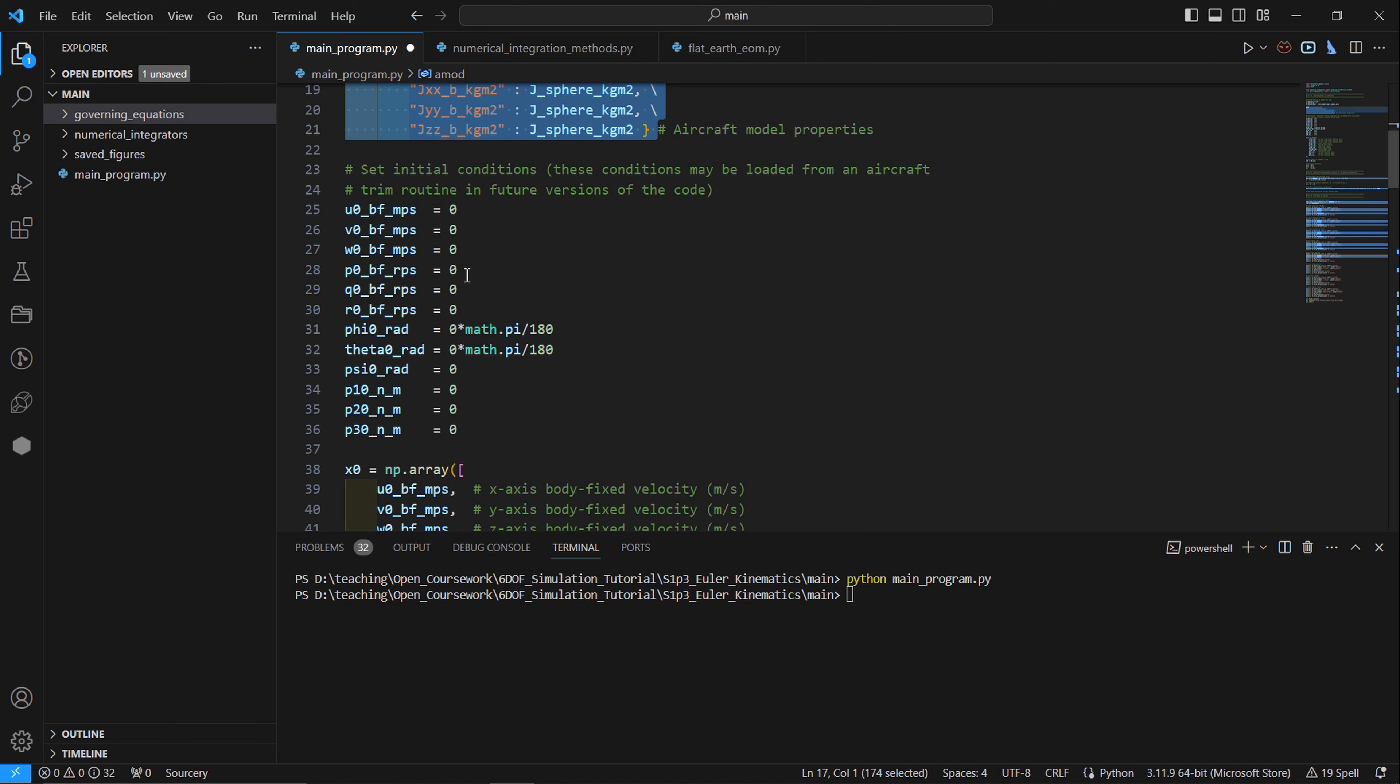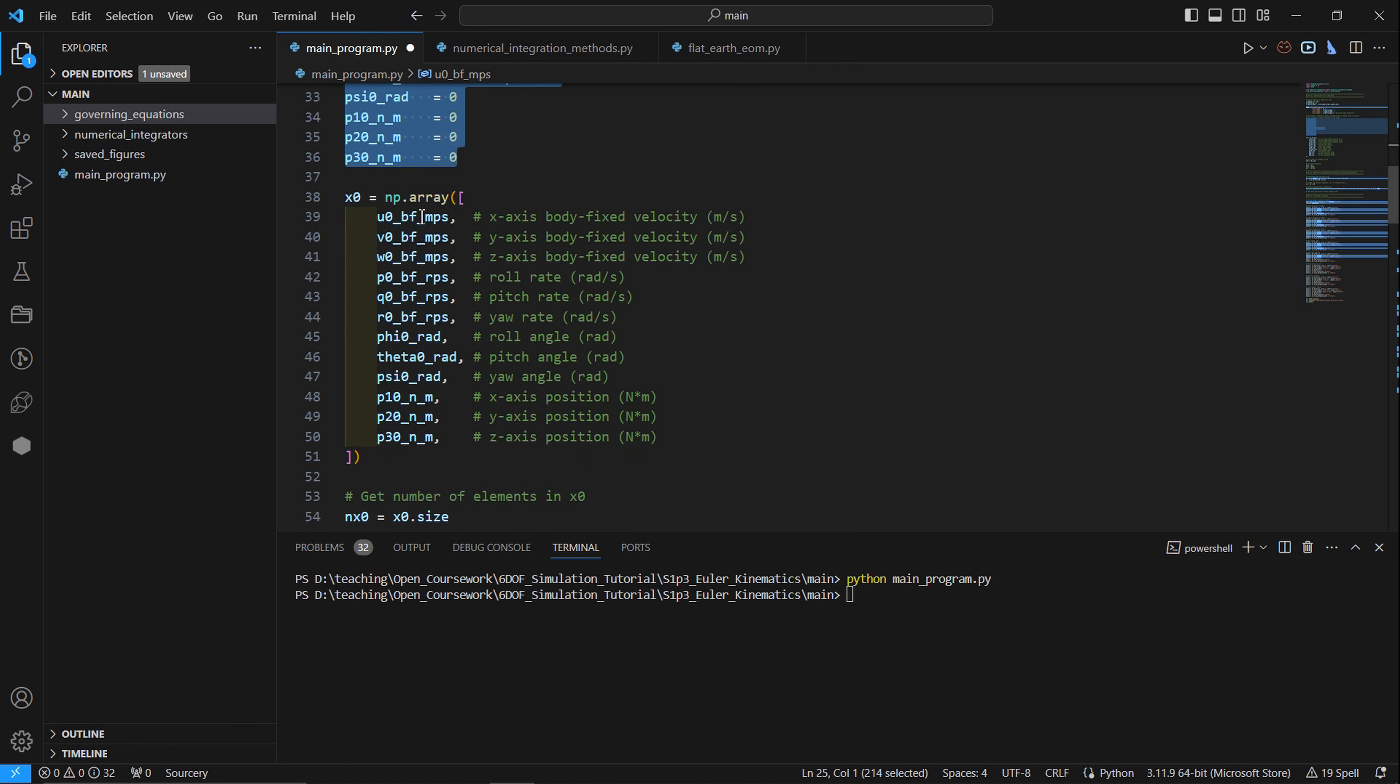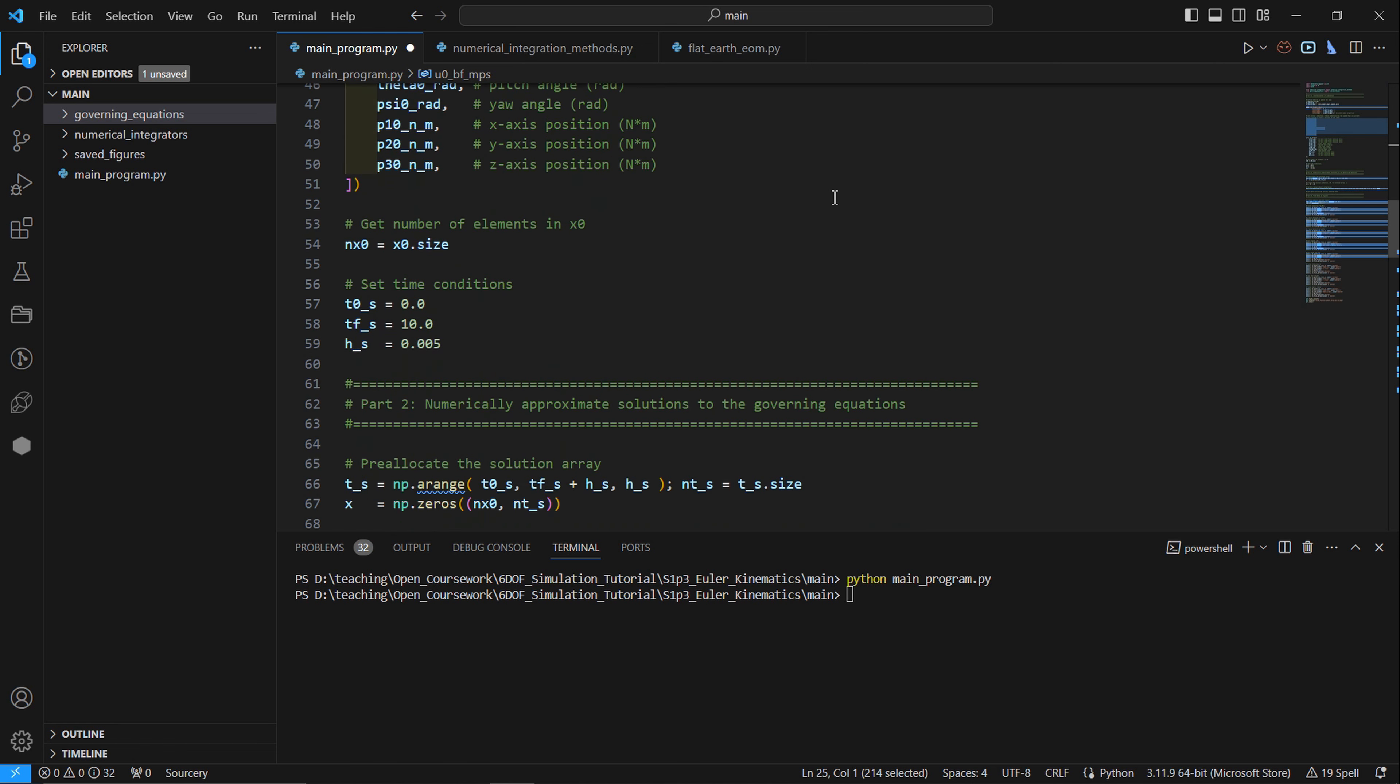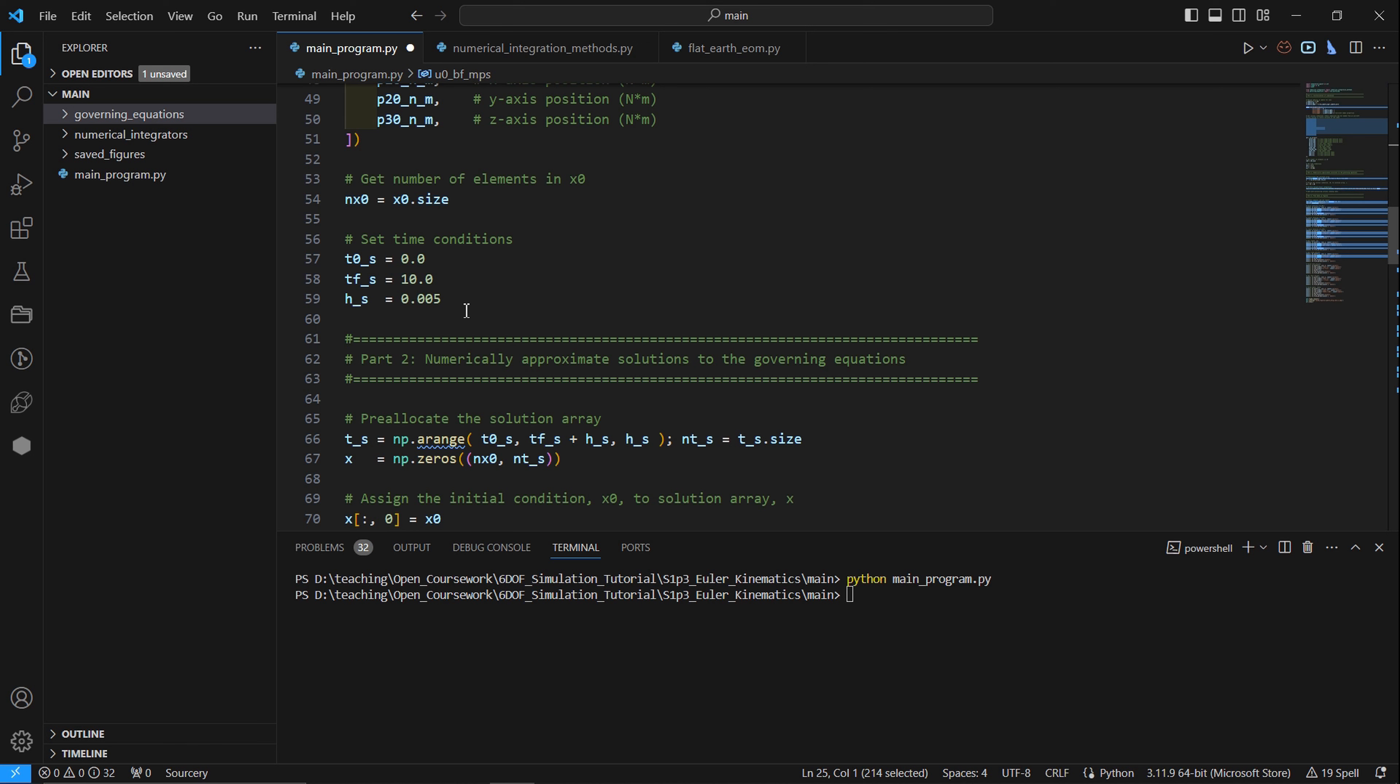Here's a dictionary that contains the mass and moment of inertia properties. And now we go to the initial conditions. We define the initial conditions state-wise according to our naming convention. And then we put those variables, those initial conditions, into an array. We call it x-naught.